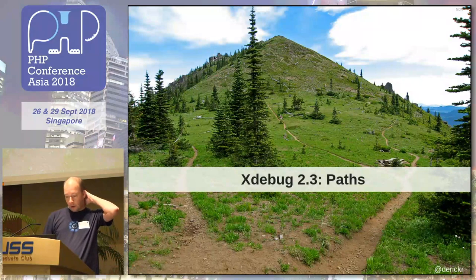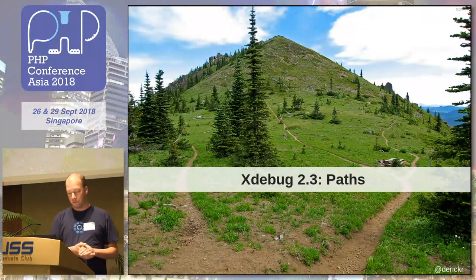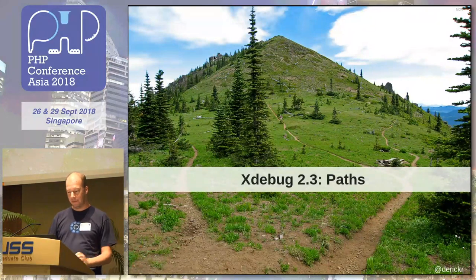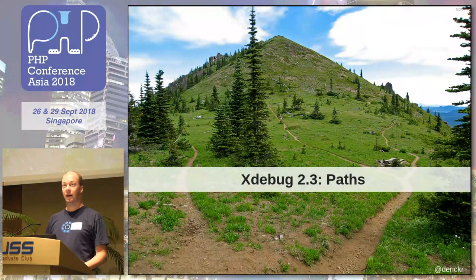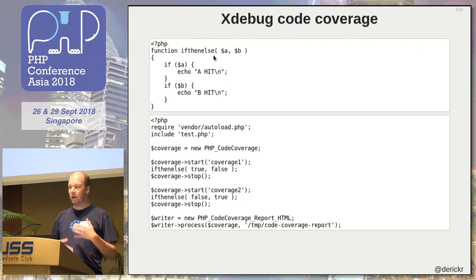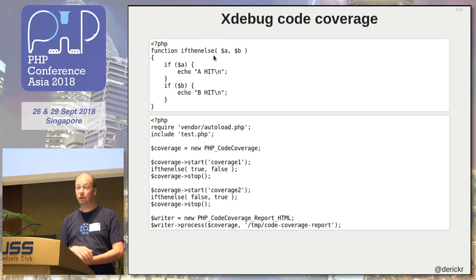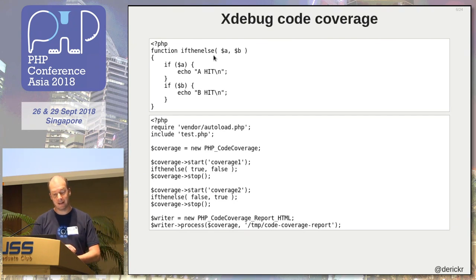Another big thing that came in Xdebug 2.3 is path coverage. Let me illustrate this with a demo — this ties into PHPUnit, in case you were at the workshop yesterday. With PHPUnit, you can tell it that whenever you run the tests, it also tells you which lines of code have been executed. This is called code coverage. You don't have to use it through PHPUnit — you can do it directly with a simple script.